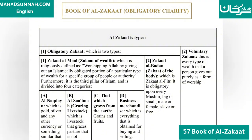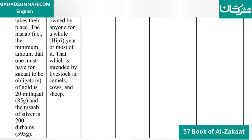It is the third pillar of Islam and is divided into four categories. The first is Al-Naqidain, which is gold, silver, and any other currency or something similar that takes their place. The Nisab — the minimum amount required for Zakat to be obligatory — for gold is 20 Mithqal (85 grams), and for silver is 200 dirhams (595 grams).